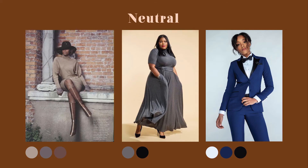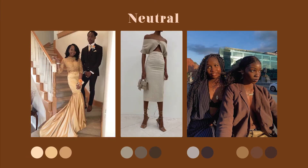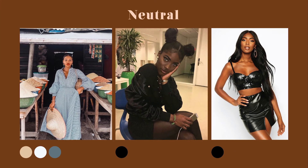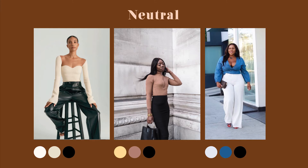Neutral. Traditionally, neutrals are colors that don't show up on the color wheel like black, gray, and some hues of brown and beige — they can also be described as earth tones. However, in styling, neutral colors are white, ivory, brown, blue, navy, black, gray, and sometimes a few shades of olive and dusty pinks. Some metallics might fit into this category too. Remember, ivory is better for warm-toned people and white is better for cool-toned people.